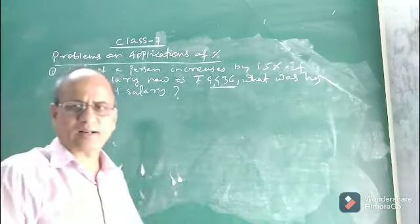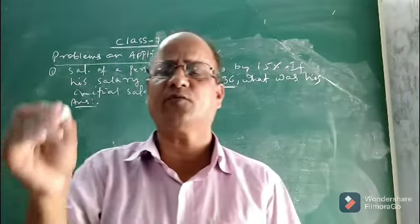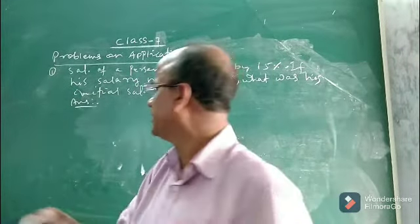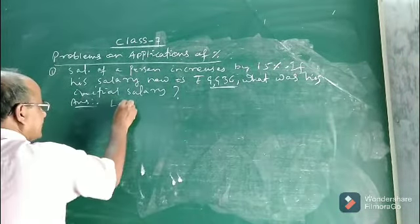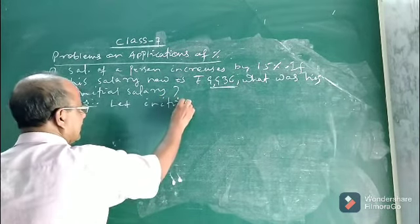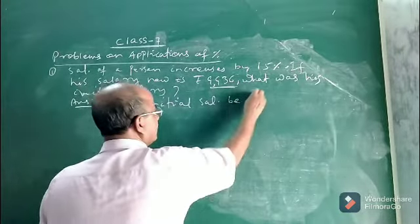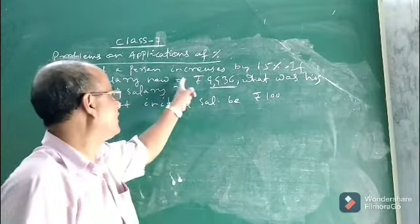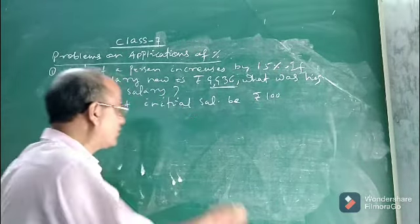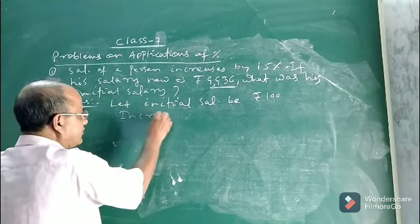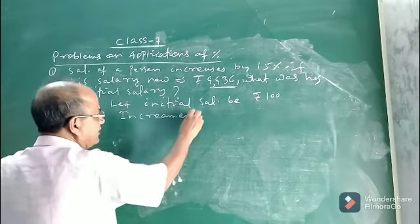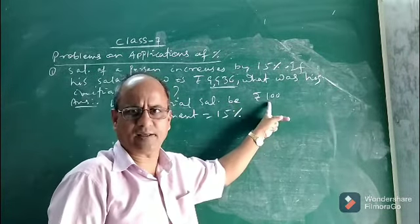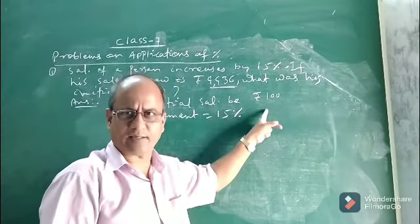We do not know what is the initial salary. In unitary method, we assume the initial salary to be rupees 100. Now if the initial salary is 100 rupees, the increment given is 15 percent. This 15 percent will be on this 100 rupees — the initial salary — because the increment is given on the initial salary.